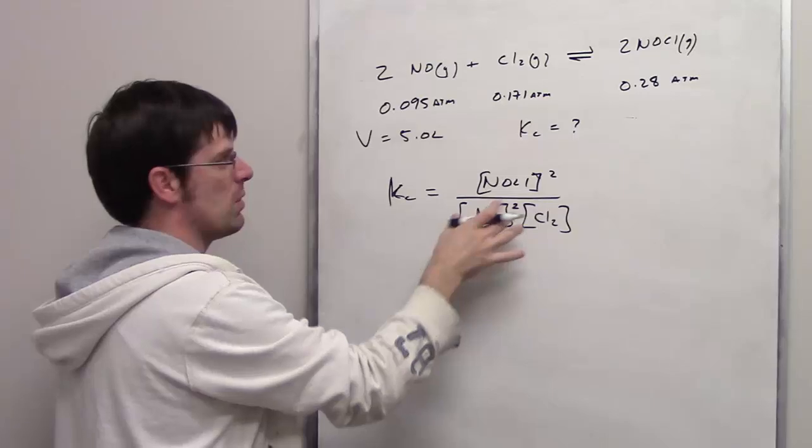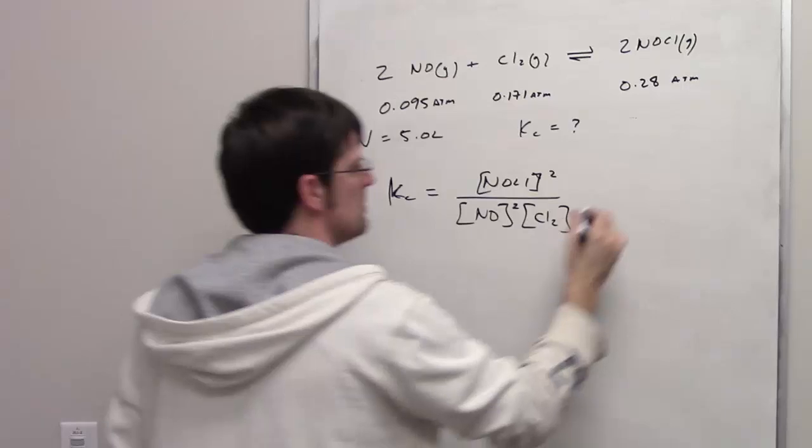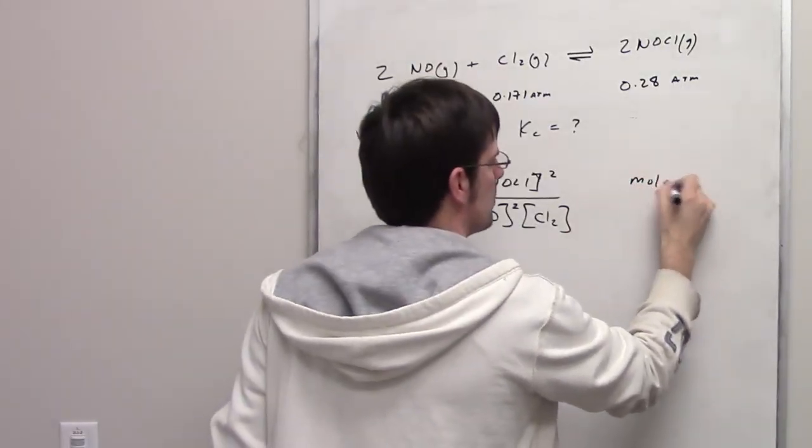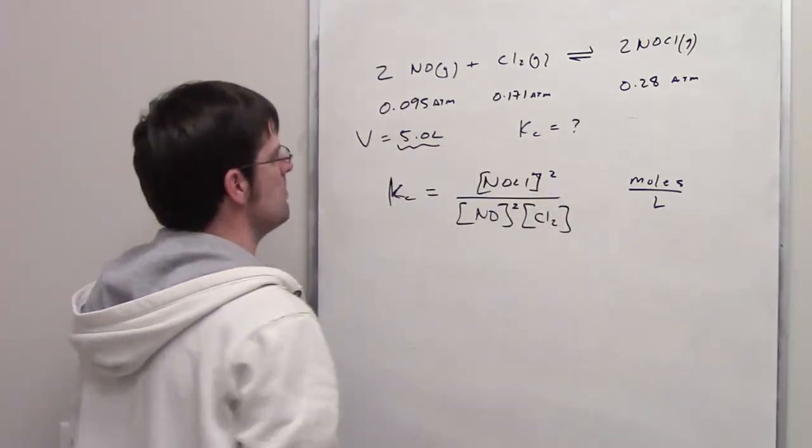How do we determine what those concentrations are? Well, concentration, as expressed here, is going to be equal to moles per liter. We have the volume, 5 liters, but how do we get the moles?